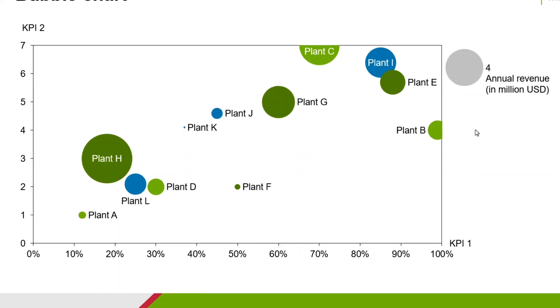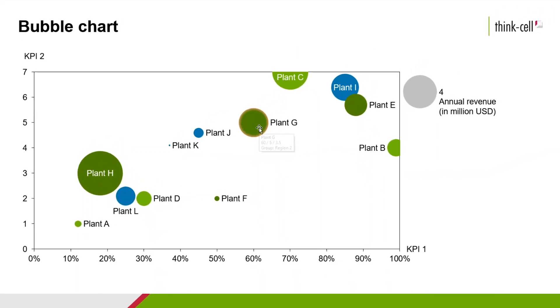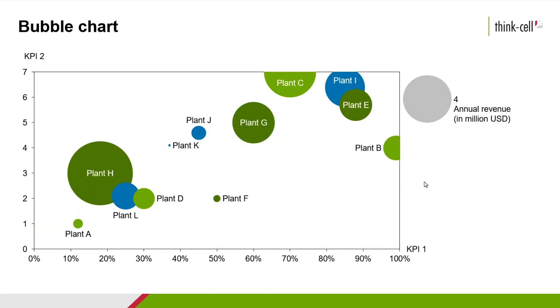To scale the size of the bubbles inside the chart, select one of them and drag its handle. All other bubbles are scaled accordingly to maintain the correct ratio between them.